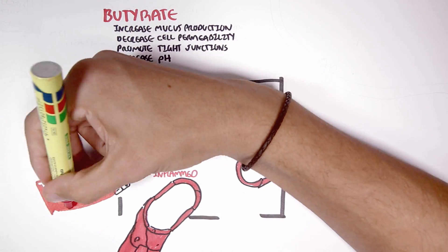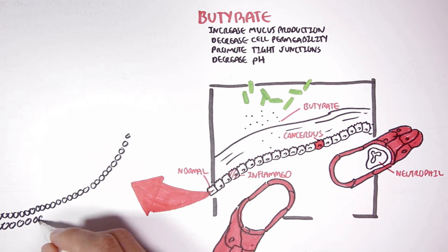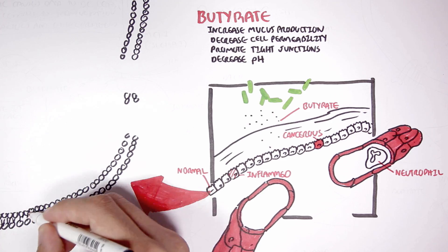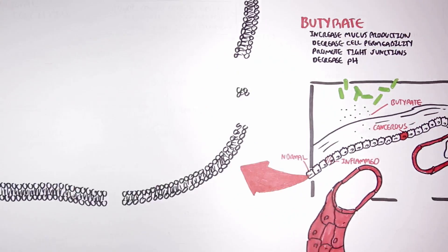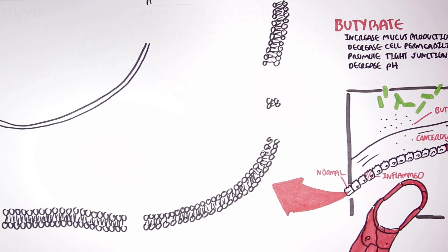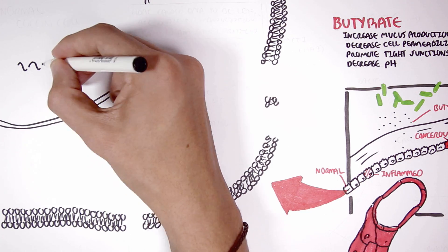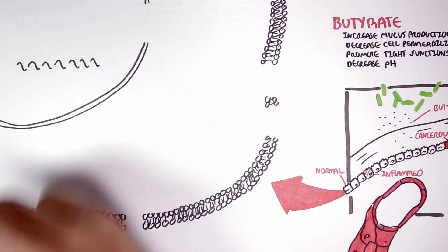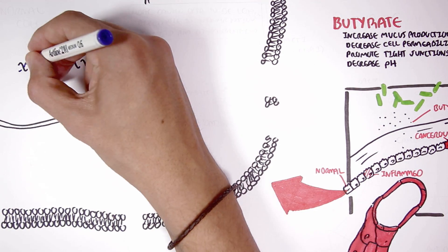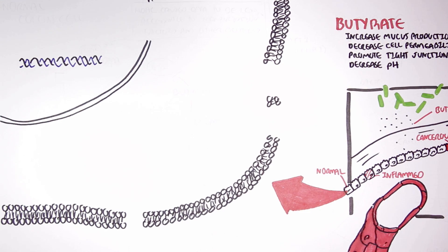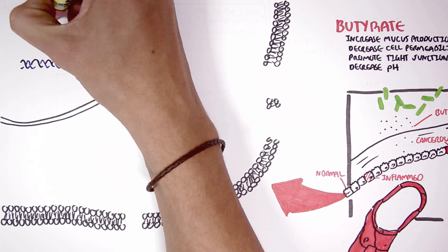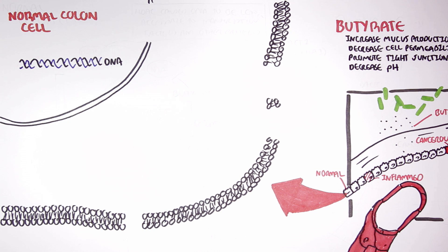Let us begin with the normal colon cell. So here is a colon plasma membrane, the outer membrane, and here is a nucleus which contains the DNA. The colon cells plasma membrane, as well as on other cell membranes, there are a variety of short-chain fatty acid receptors and transporters.